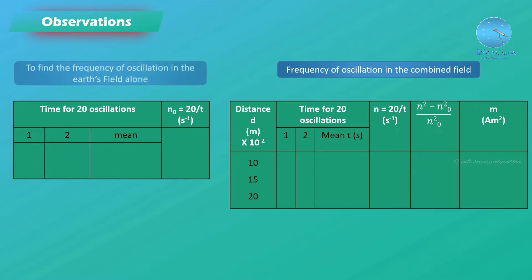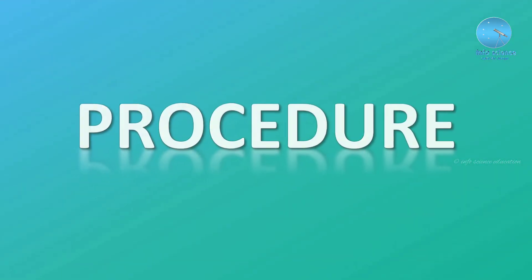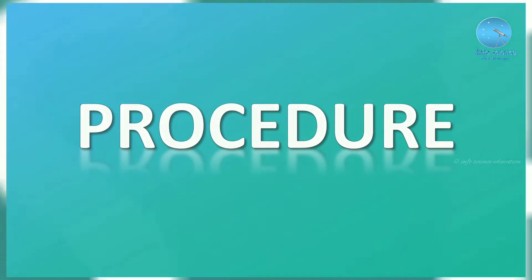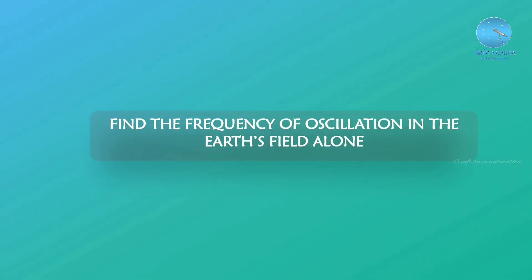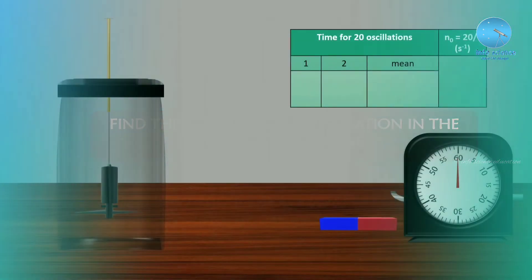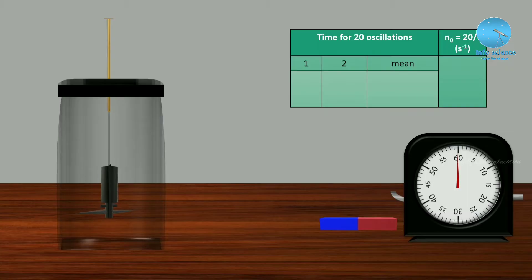Moving to the procedure of this experiment. For the Cells Vibration Magnetometer, we arrange the setup. We suspend the bar magnet using a torsional string. There are two pointers to help count the oscillations.